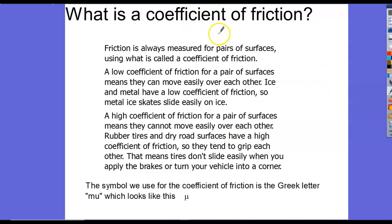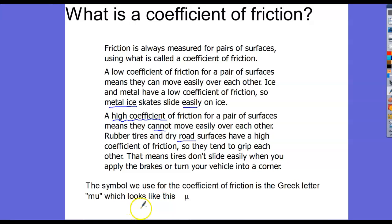What is a coefficient of friction? It is a number that represents how difficult or how easy it is to slide materials across each other. A high coefficient of friction means the pair of surfaces do not move easily over each other. A low coefficient of friction means the pair of surfaces slide easily over each other. For example, metal ice skates on ice have a very low coefficient of friction, while rubber tires on concrete have a high coefficient of friction — which you want, so they don't slide easily. The symbol for coefficient of friction is the Greek letter mu. It is not a 'u' — it's the Greek letter mu.